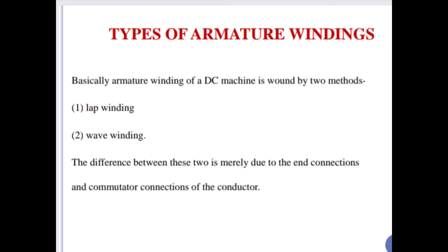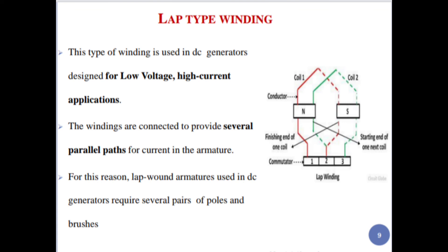Now, the types of armature winding. Basically, the armature winding of a DC machine is wound by two methods: first is lap winding and second is wave winding. The difference between these two is merely due to the end connections and commutator connections of the conductors. Lap winding is used in DC generators designed for low voltage, high current applications.